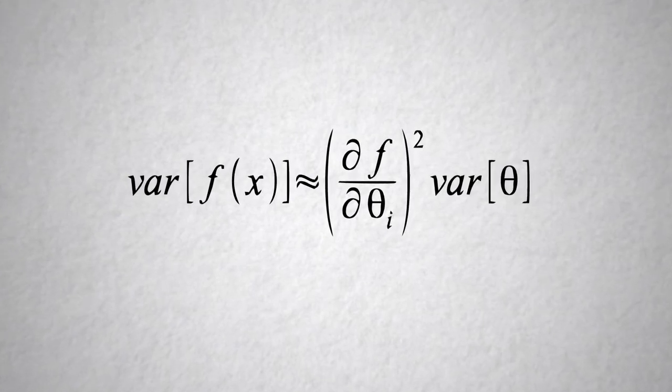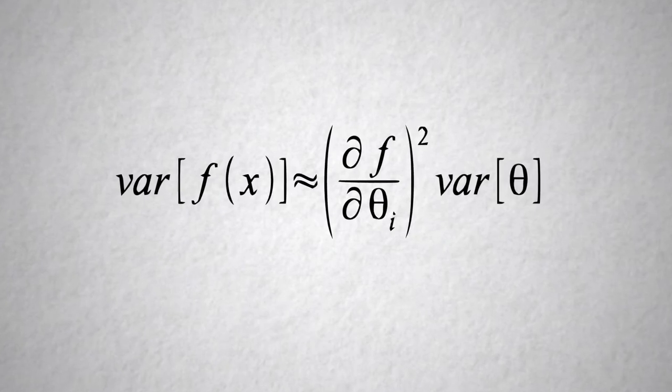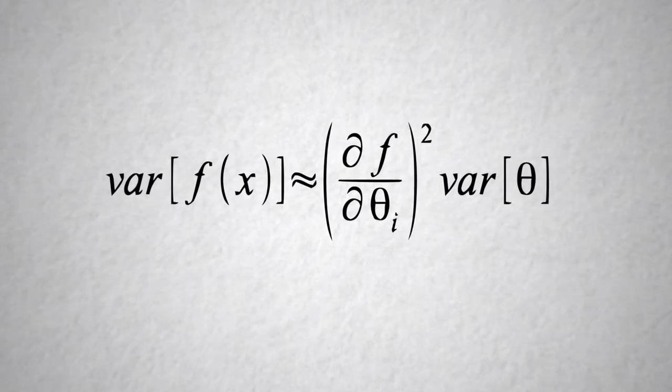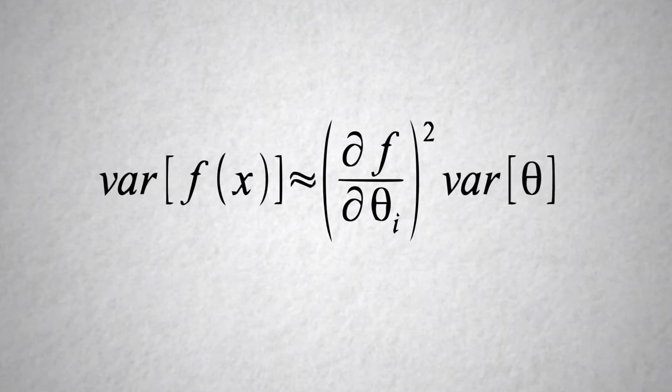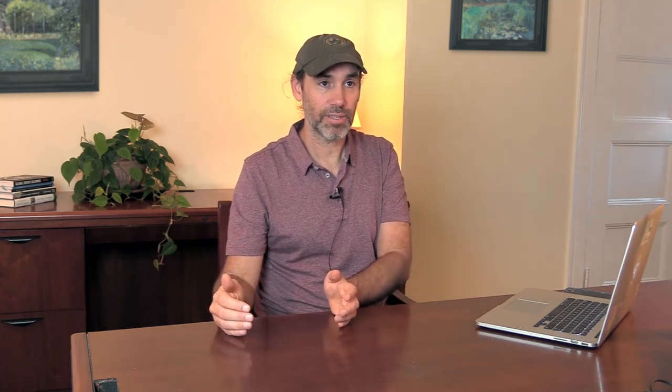Essentially, we're saying that when we propagate uncertainty, there's a contribution coming from the sensitivity of the model to that component and the uncertainty in that component. And as before, we also need to include terms that account for the interactions that arise as the product of the partial derivatives of each of two factors, and then the covariance between those two factors.